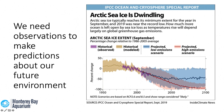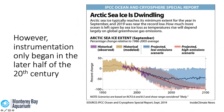Why did we want to set out and do this study? We need observations to make predictions about our future. In this example from the IPCC, Arctic sea ice is decreasing. They made two projections — blue and red — for different future scenarios. All of that is based on observed data from 1980 to present day, because instrumentation only began in the latter half of the 20th century.